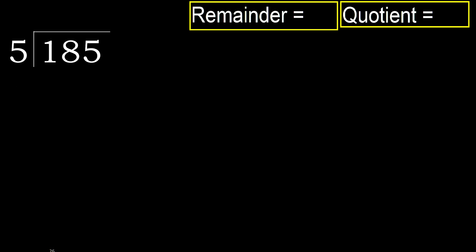185 divided by 5. 1 is less, therefore next. 18 is not less, therefore with 18.